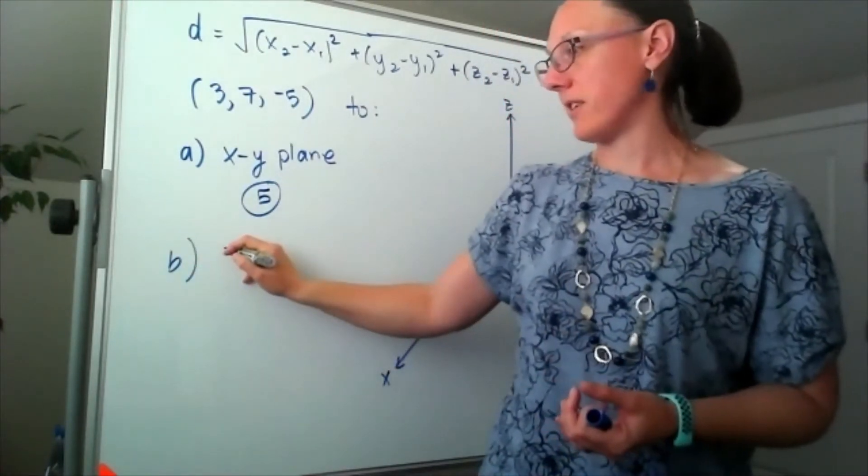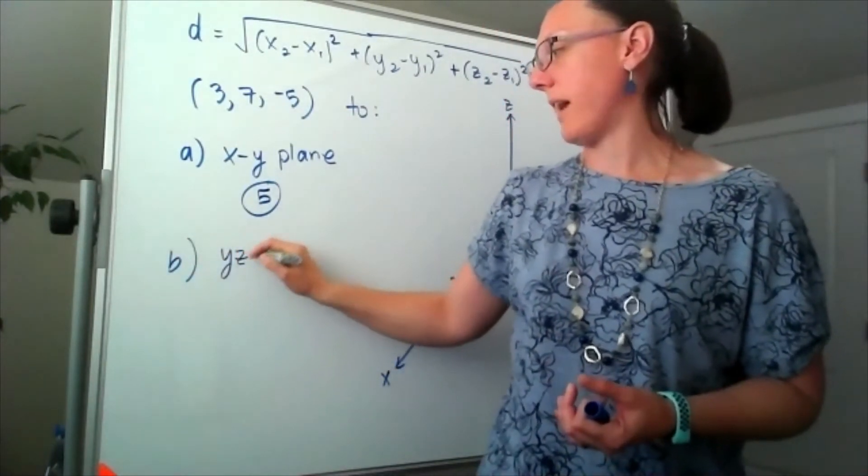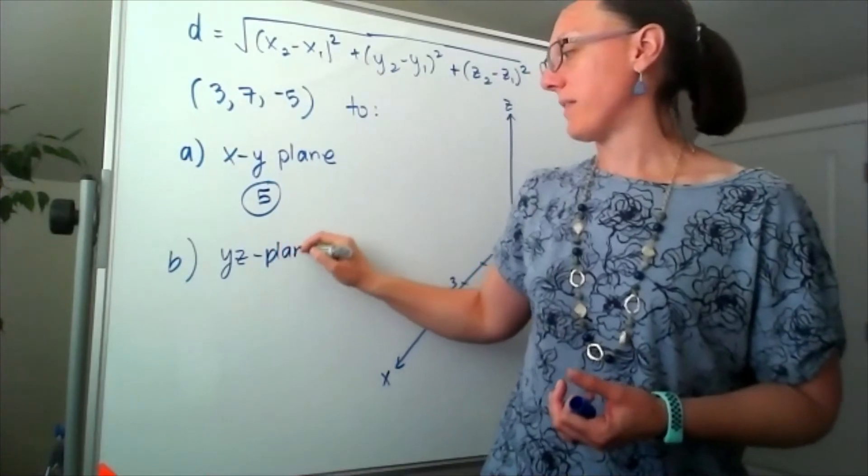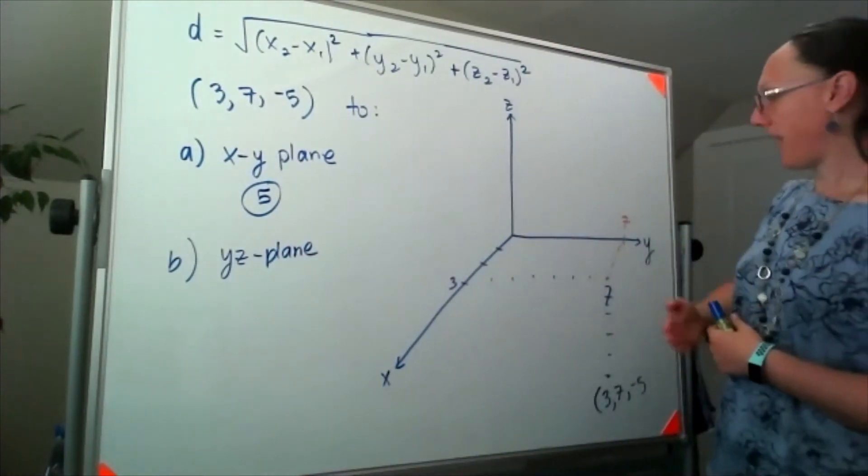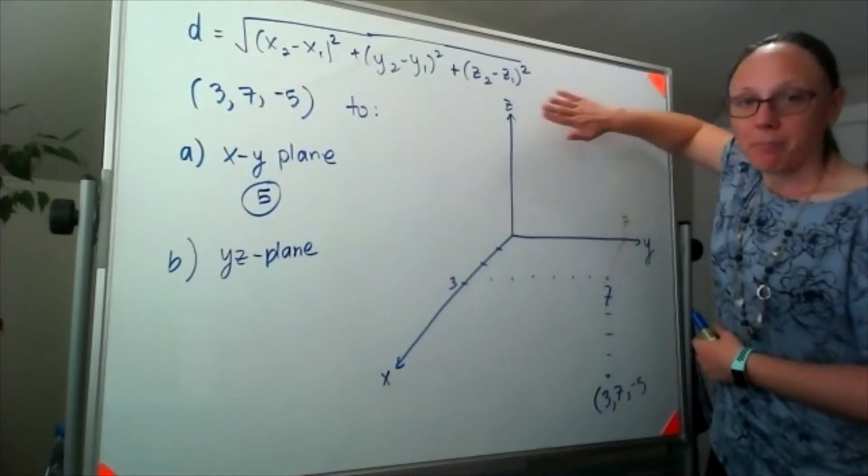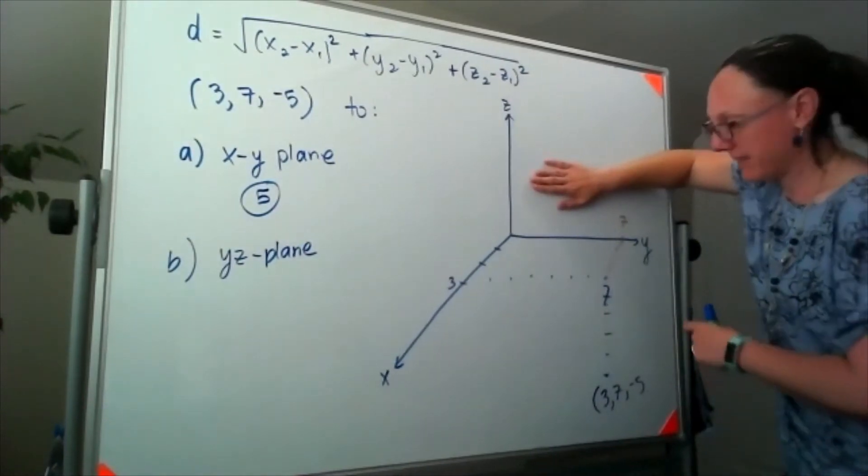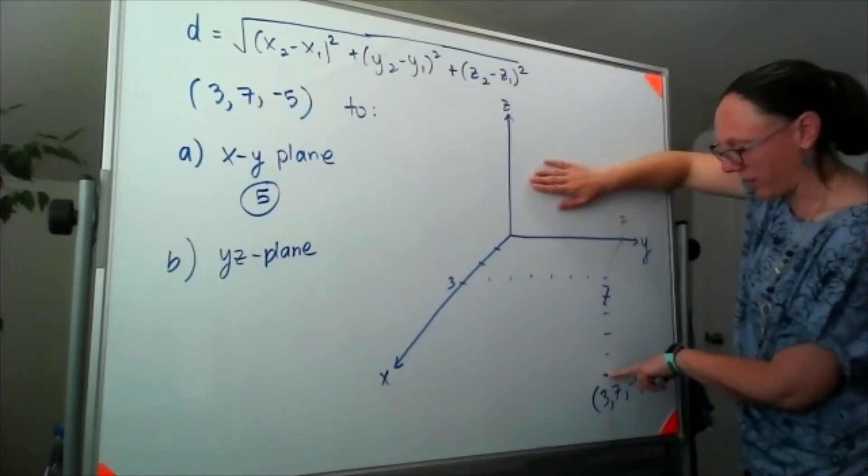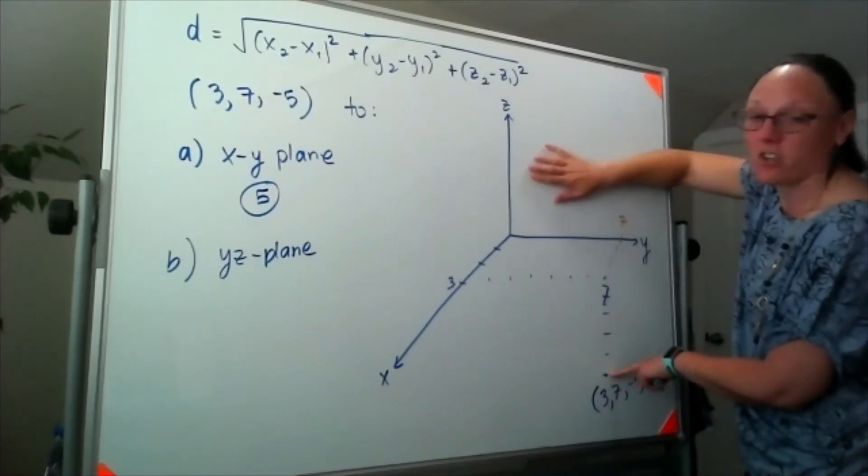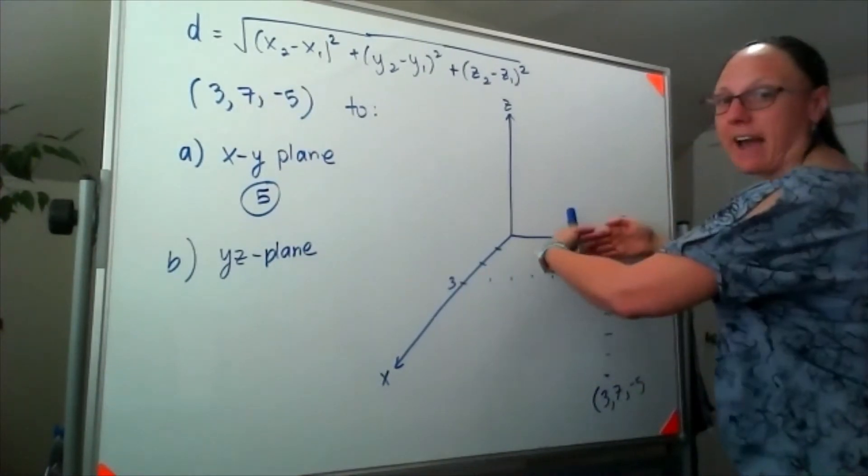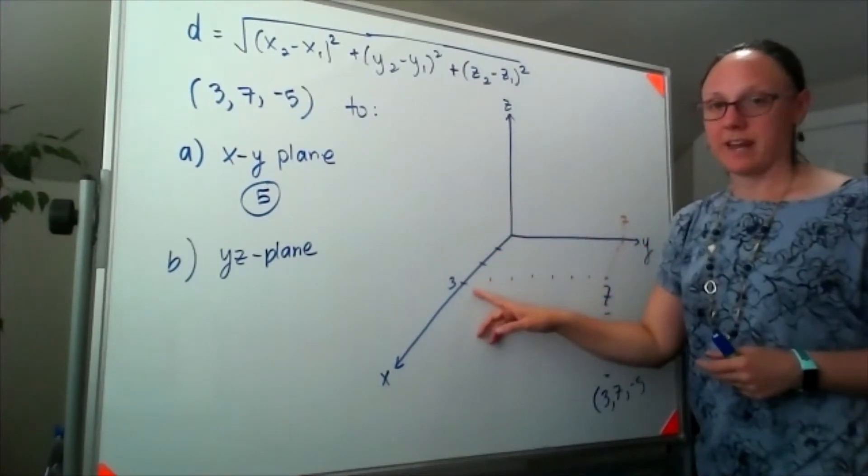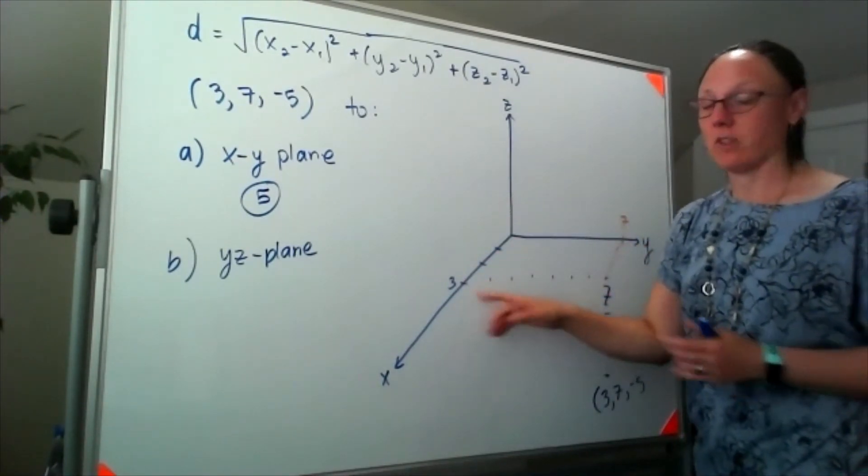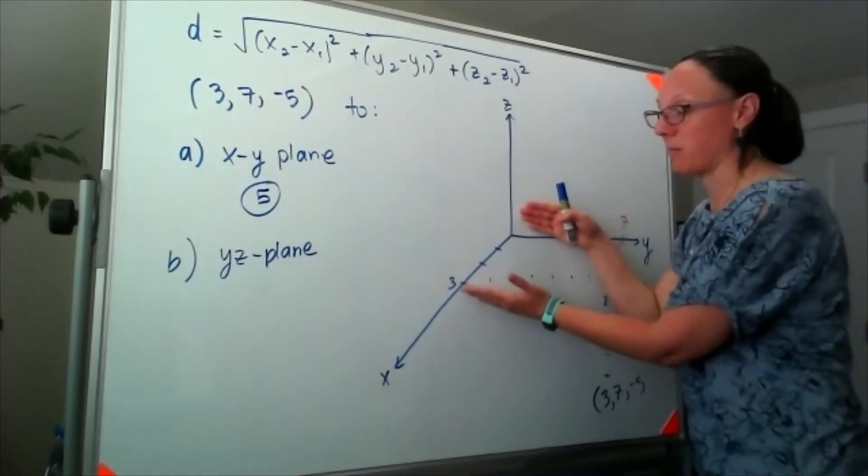B is asking for the distance to the yz plane, and I'm going to think about this in exactly the same way. So that yz plane, that's what lives back here in the board. So if I'm standing at this point, then the distance to the yz plane is how far we've walked forward. Well, we walked forward 3 steps to get there, so that means my distance to the yz plane is 3.